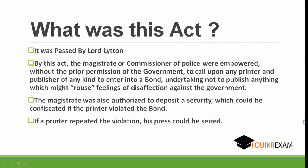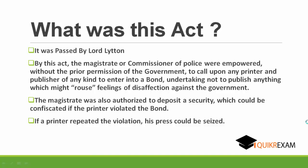By this act, the magistrate could deposit a security which could be confiscated at the time of violation of that bond. And if any printer or publisher repeated that violation, that press could be seized. So by this act, the British government wanted to control the Indian papers.